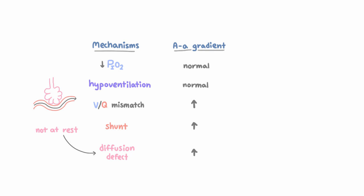For example, in ARDS, or acute respiratory distress syndrome, you often see VQ mismatch, increased shunt, and diffusion defects all at once.